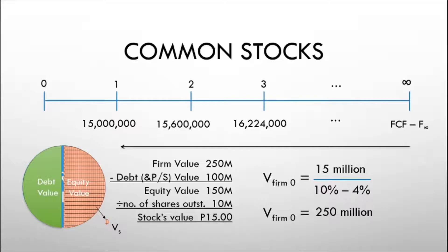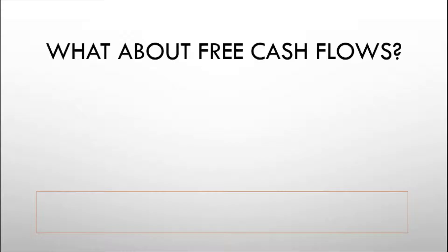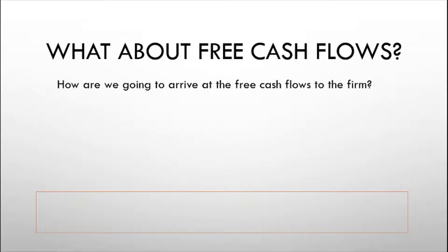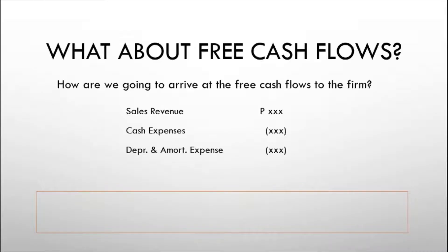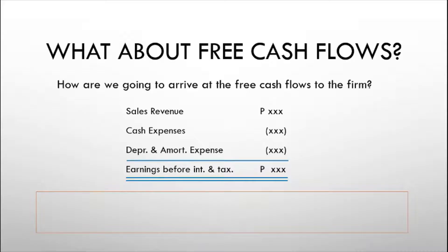This is how you arrive at the value of the stock using the corporate valuation model. Now, how do we arrive at the free cash flows to the firm? Let us begin with earnings before interest and taxes, or EBIT. To arrive at EBIT, we must deduct from sales revenue all expenses related to the operations of the company — that includes cash operating expenses as well as non-cash operating expenses like depreciation and amortization.